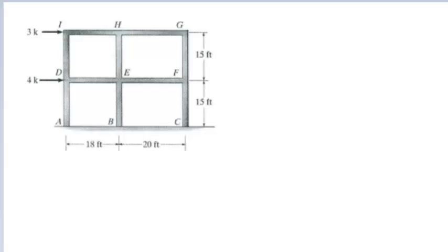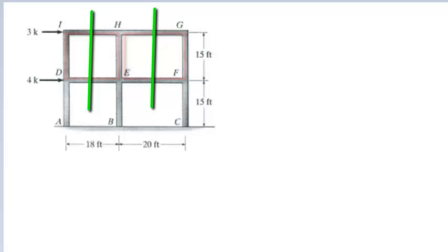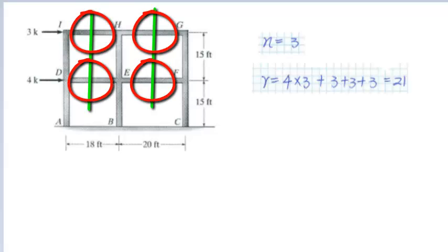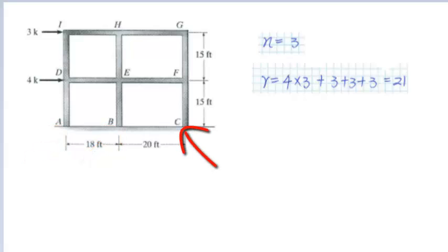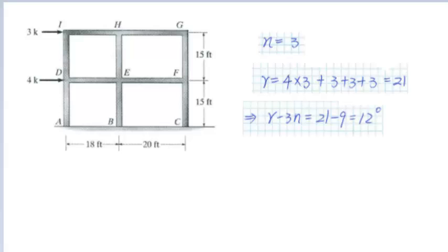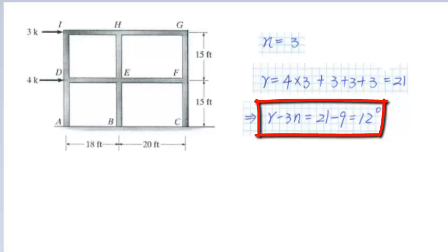Before solving the problem, we need to determine the degree of indeterminacy of this two-story moment frame, which equals r minus 3n. This frame contains closed loops, so we need to cut the loops open. After the cut, the frame breaks into three separate members, giving n equals 3. The total number of reactions equals 4 cut sections times 3 reactions per section, plus 3 reactions at A, plus 3 at B, plus 3 at C, totaling 21. The degree of indeterminacy r minus 3n equals 21 minus 3 times 3, which equals 12.